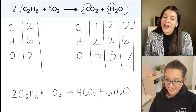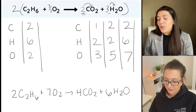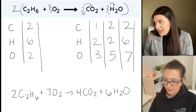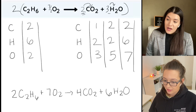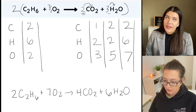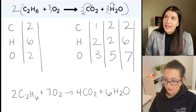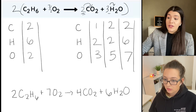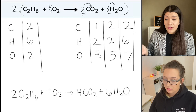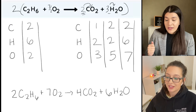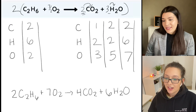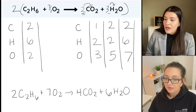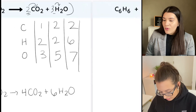One thing I will point out — in case you see this on a multiple choice question and they don't multiply the end result by two, it wouldn't be wrong. I typically see that most professors prefer whole numbers, but if one of the answer choices has the fraction, that's still correct — it just wouldn't be the finished version. Just a heads up. Good to know. And then we have one more, so let's do that last one.